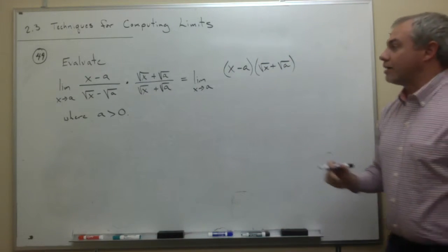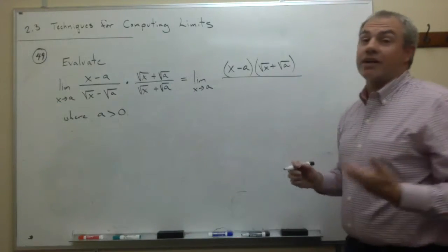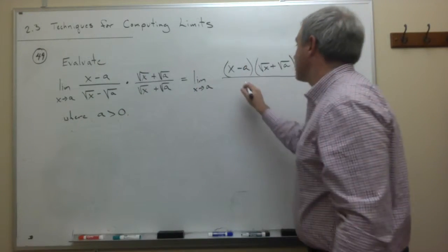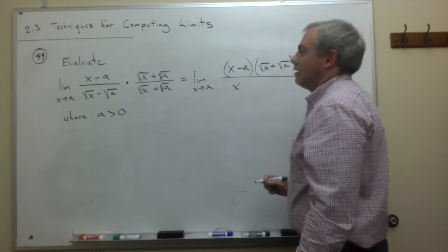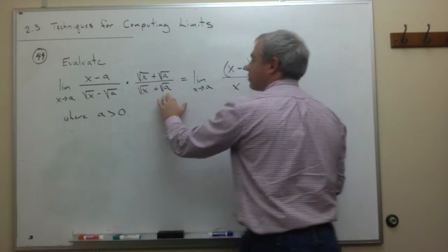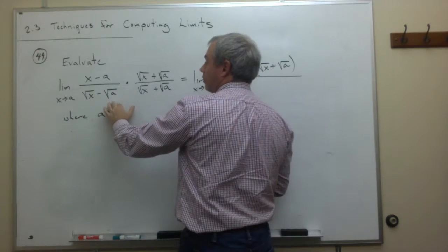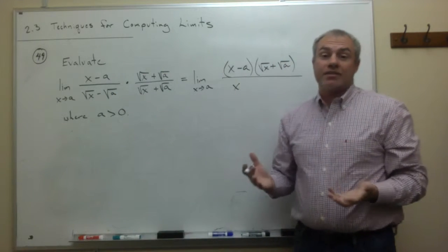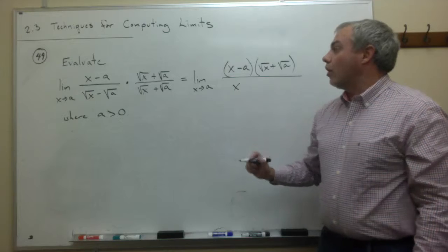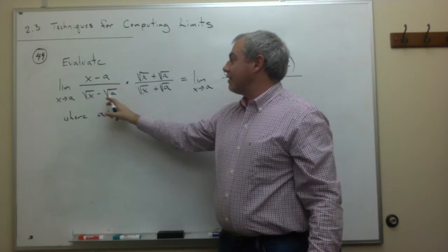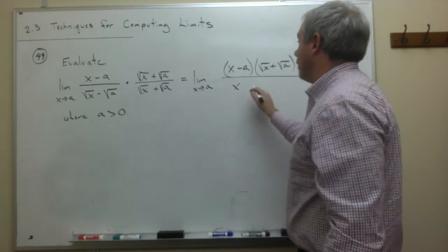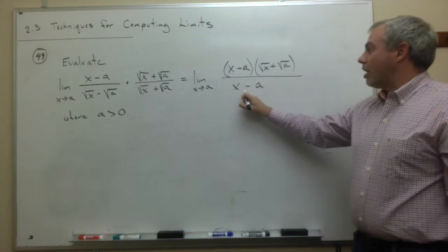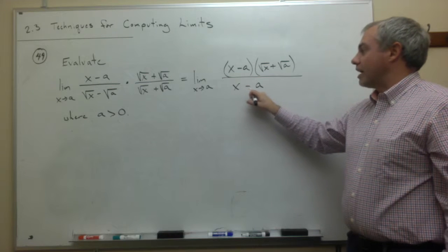And on the bottom, this one I will multiply out because I'm trying to make it simpler on the bottom. I get a square root of x times the square root of x, which is x. I get a square root of x times the square root of a, and I get a minus square root of a times the square root of x. Those two terms, I could write them out, but they cancel each other out. And then I get a negative square root of a times the positive square root of a, which is a negative a. So on bottom, I end up with just x minus a.